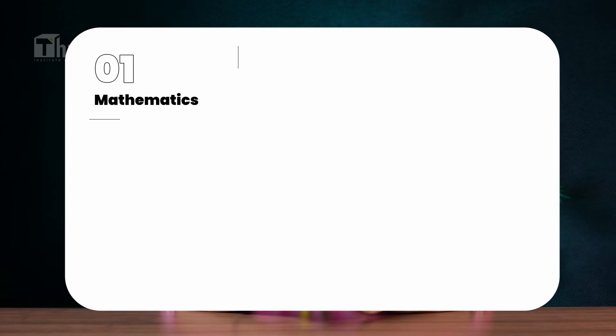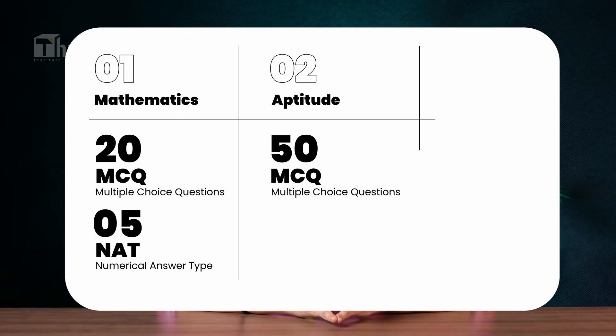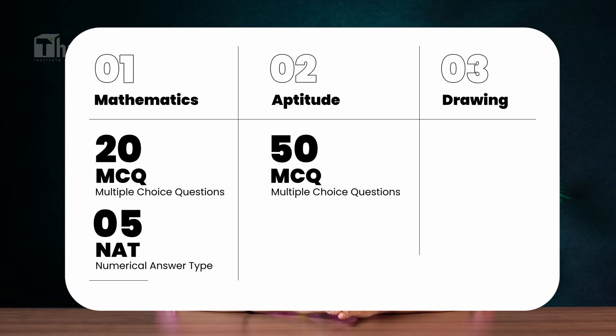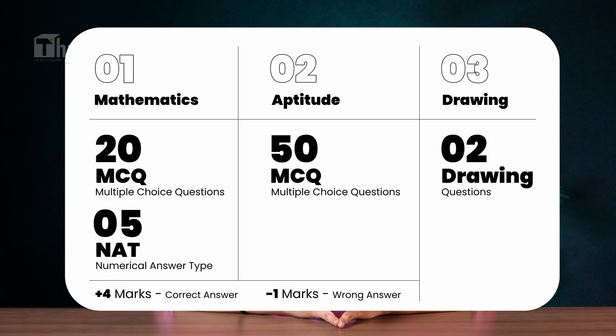Let's look at the exam pattern of JEE B.Arch. Paper 2A for B.Arch is a 3-hour paper out of 400 marks. The paper has three parts: Part 1 is mathematics consisting of 20 MCQs and 5 numerical answer type questions; Part 2 is an aptitude test consisting of 50 MCQs; and Part 3 is a drawing test consisting of two drawing questions. In Parts 1 and 2, you are awarded 4 marks for a correct answer and minus 1 mark for each wrong answer. For B.Planning (Paper 2B), the drawing test is replaced with planning-based aptitude questions. If you want us to do a video on the JEE exam syllabus, do let us know in the comments.